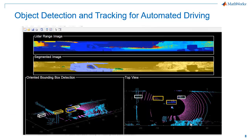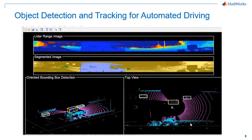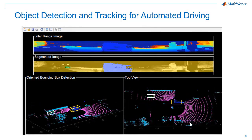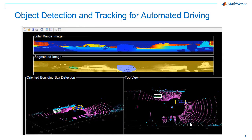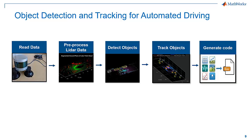Now let's take a deep dive into our first example to detect and track objects for automated driving applications. Here is how our workflow looks. We will first read point cloud data into MATLAB and then do some preprocessing. After that, we will detect objects on the preprocessed point cloud data, then track these objects using a JPDA Tracker. Finally, we will create C code for this algorithm to deploy it on our hardware.